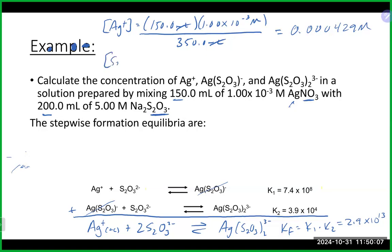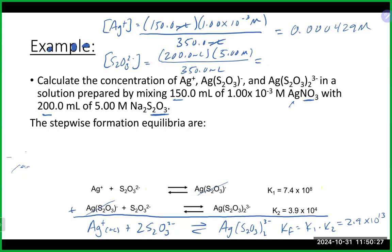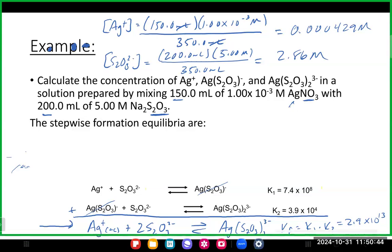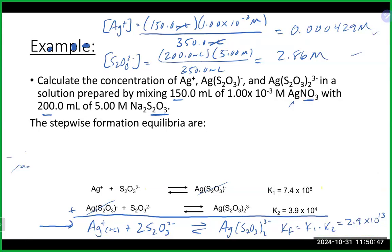We do the same thing for S₂O₃²⁻, our thiosulfate ligand. We used 200 mL of it at a concentration of 5 M, divided by the total volume of 350 mL: 200 times 5 divided by 350 gives us about 2.86 M. Any questions on that?